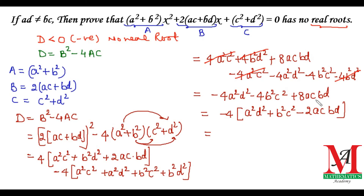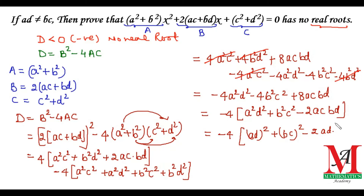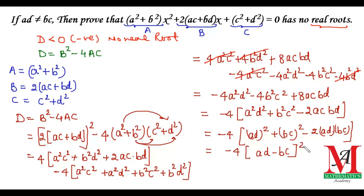Now we want to convert this into a whole square by completing the square. This gives minus 4 times (ad)² + (bc)² minus 2·ad·bc, which is the formula a² + b² - 2ab = (a - b)², so we can write it as minus 4 times (ad - bc) whole square.